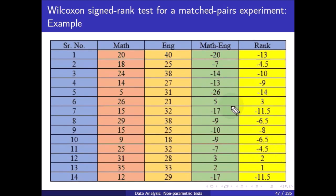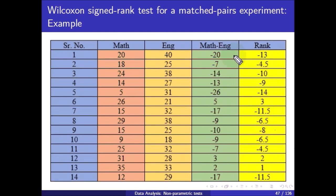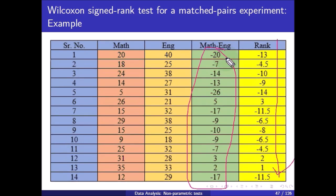The ranks are identified based on the magnitude of the differences, and then we assign the sign of the original difference to each rank. So if the difference is negative, the rank is negative; if the difference is positive, the rank is positive.